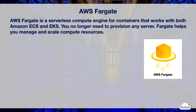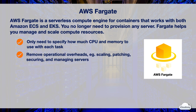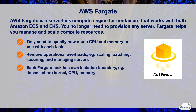AWS Fargate is a serverless compute engine for containerized applications, working with both Amazon ECS and EKS. With Fargate, you don't need to provision and manage any server. When you define tasks in Fargate, you only specify the CPU and memory for each task — no instance types needed. Fargate removes operational overheads such as scaling, patching, securing, and managing servers, and ensures the underlying servers are always up to date. Each Fargate task has its own isolation boundary and doesn't share the kernel, CPU, or memory with other tasks. You only pay for the CPU and memory your tasks use.